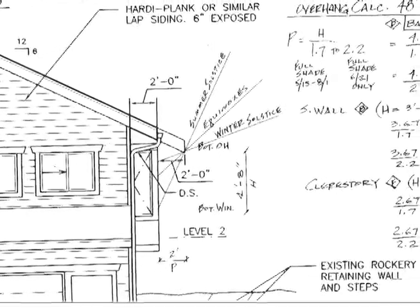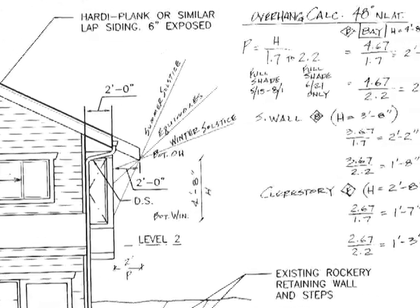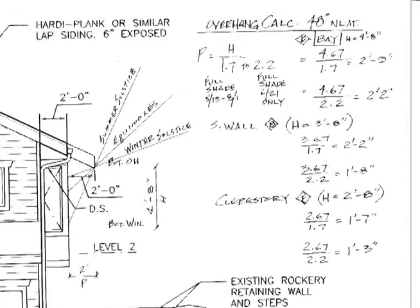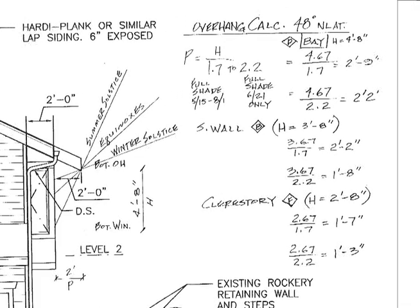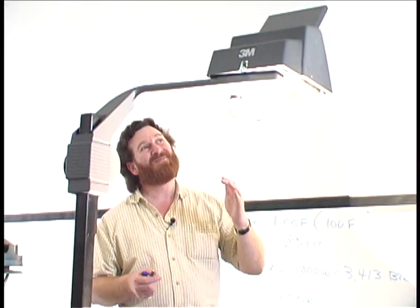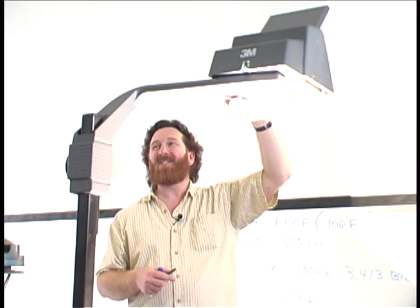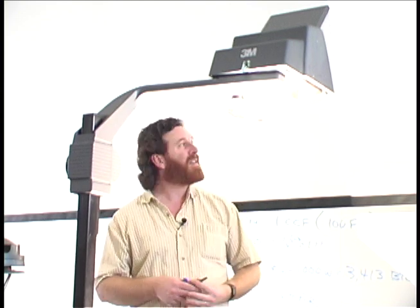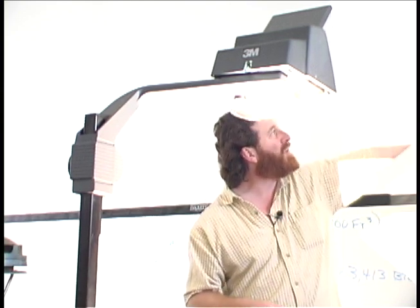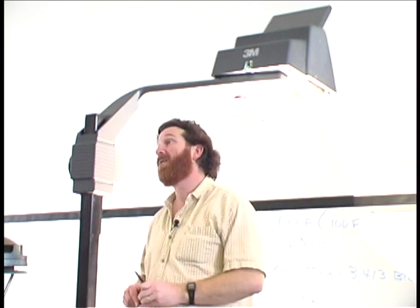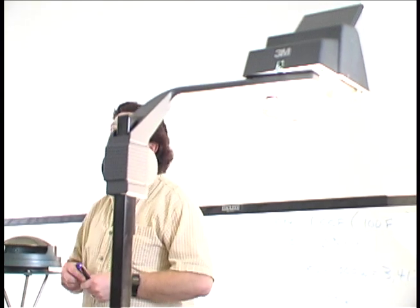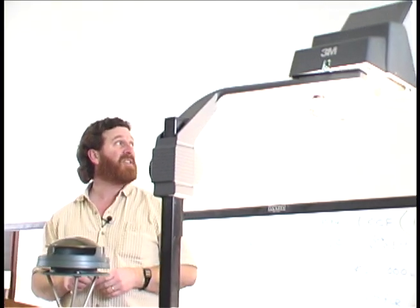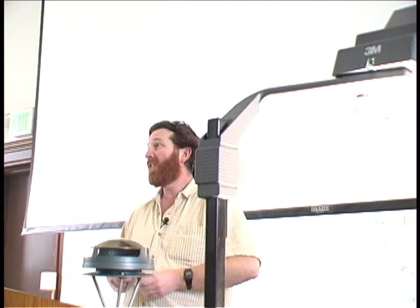If you're a hot weather weenie like me, you'd probably use the 1.7 number. Using 1.7 will give you full shade from May 15th until August 1st, which sounds like a good thing. If you've got really tall windows and 1.7 makes the overhang too large, then 2.2 will give you full shade on the summer solstice only — that's kind of a minimum. You don't want your overhang shorter than that, or you'll have sun coming in during summer and you'll have to put up shades or just cook.